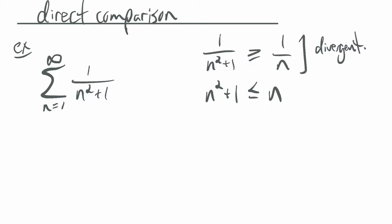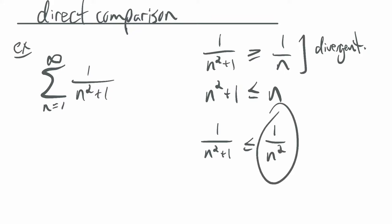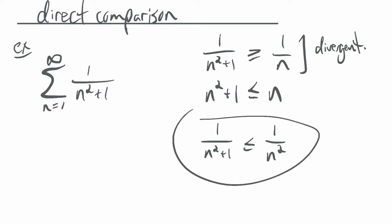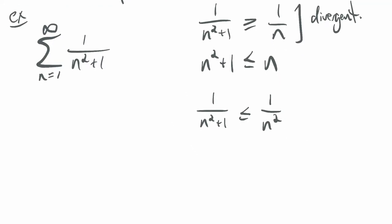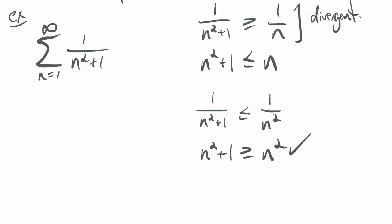Instead, we'll compare this to a P-series. I'm going to say that 1 over n squared plus 1 is less than or equal to 1 over n squared, which as a series I know is convergent. So if I can show that this is always true, or at least true after a certain point — true for some tail of the series — then I will be able to infer convergence. If I flip both sides of this inequality, I get n squared plus 1 is greater than or equal to n squared. If I subtract n squared on both sides, I get 1 is greater than or equal to 0. So yeah, that's obviously true.